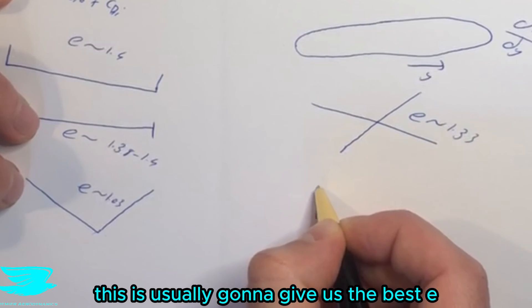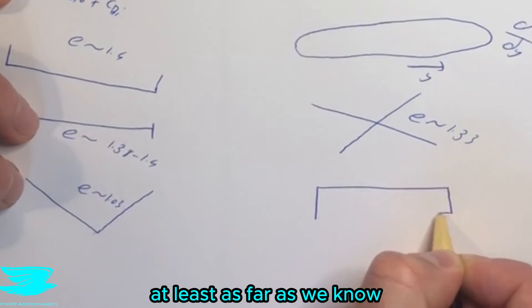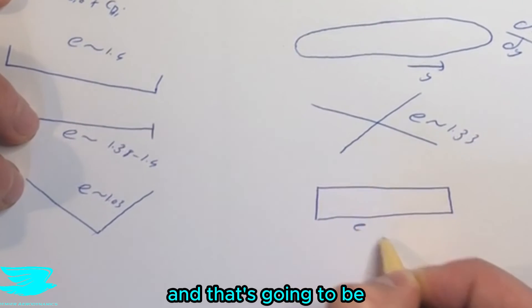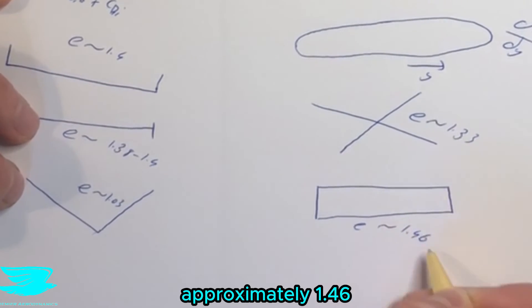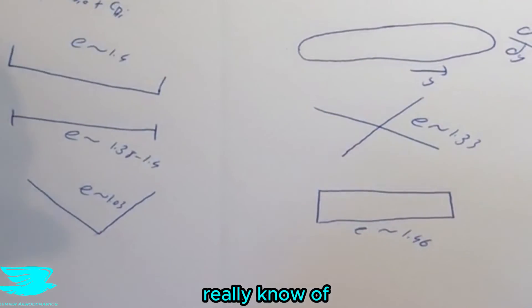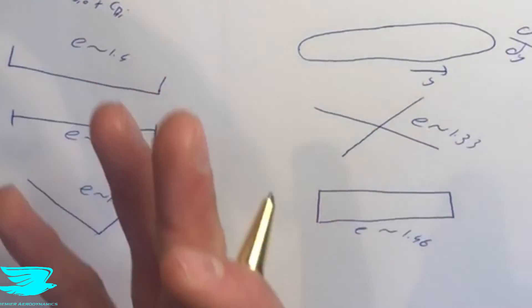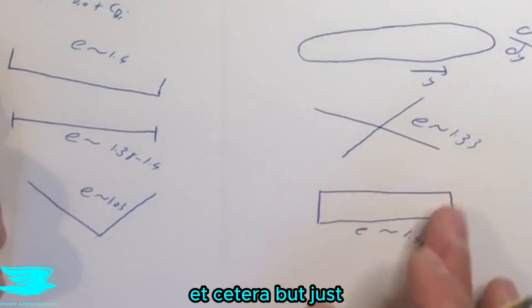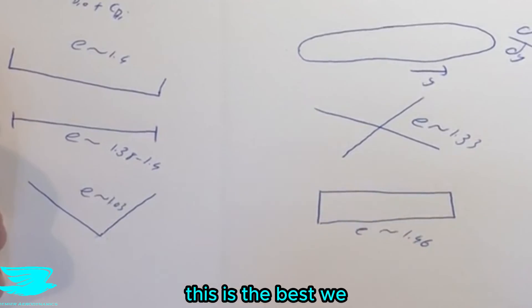And if we have a box wing, this is usually going to give us the best E, at least as far as we know. And that's going to be approximately 1.46. So that is the most efficient planform that we really know of, other than if you were to use active flow controllers, etc. But just generally speaking, a planform, this is the best one we can come up with.